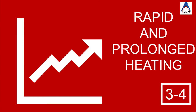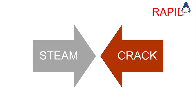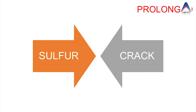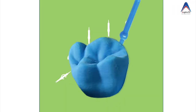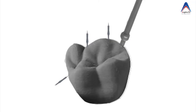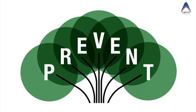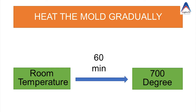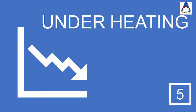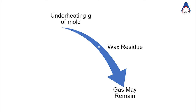The next reasons are related to the heating of the investment material — either rapid or prolonged. Rapid heating can form steam or cracks in the investment connected to the mold. Similarly, prolonged heating can release sulfur, forming irregularities or cracks. To prevent this, for gypsum-bonded investment material generally heated to 700°C, you must reach this temperature from room temperature in approximately 60 minutes. Under-heating also leads to irregularities because wax residue or gases may remain in the mold space.